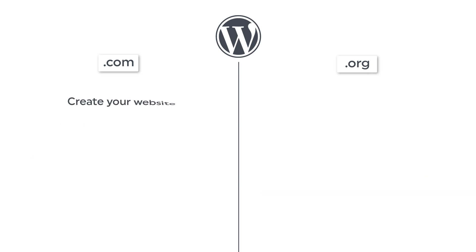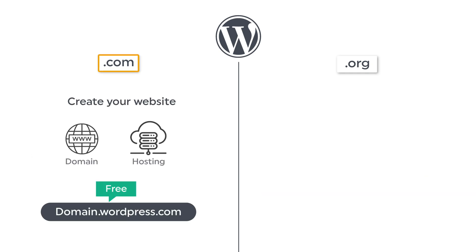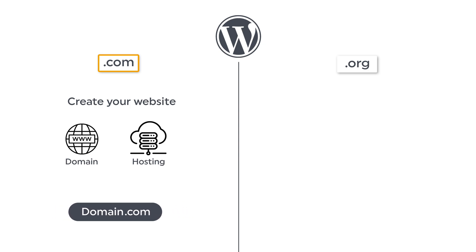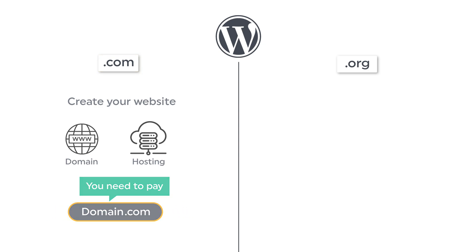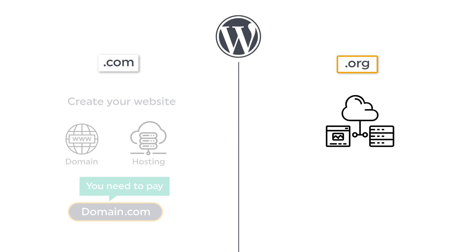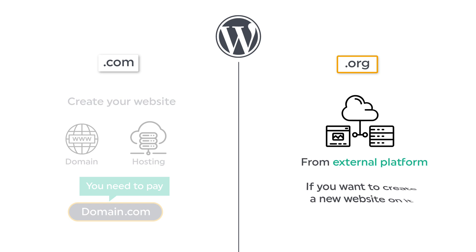Now if you create a website on WordPress.com, you'll get a free domain and hosting. And if you want to add a custom domain name to your website, you need to pay for it. While in WordPress.org, you need to get a new domain and hosting from an external platform if you want to create a new website on it.